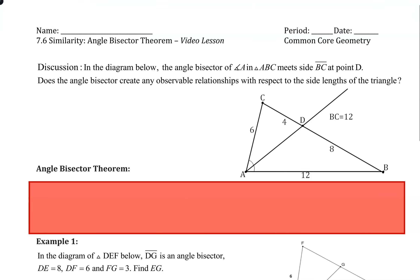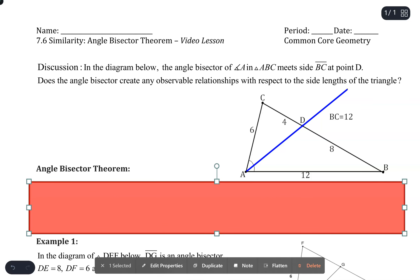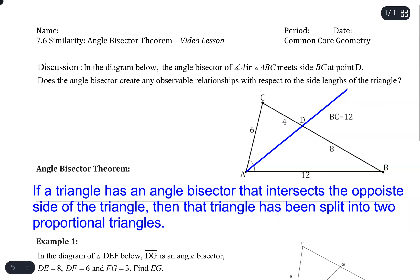This is video lesson 7.6 dealing with the angle bisector theorem. Given a triangle, when you have an angle bisector drawn from an angle through the other side, this line AD would be an angle bisector. The theorem states that if an angle bisector intersects the opposite side of the triangle — in this case CB — it splits the triangle into two proportional parts.